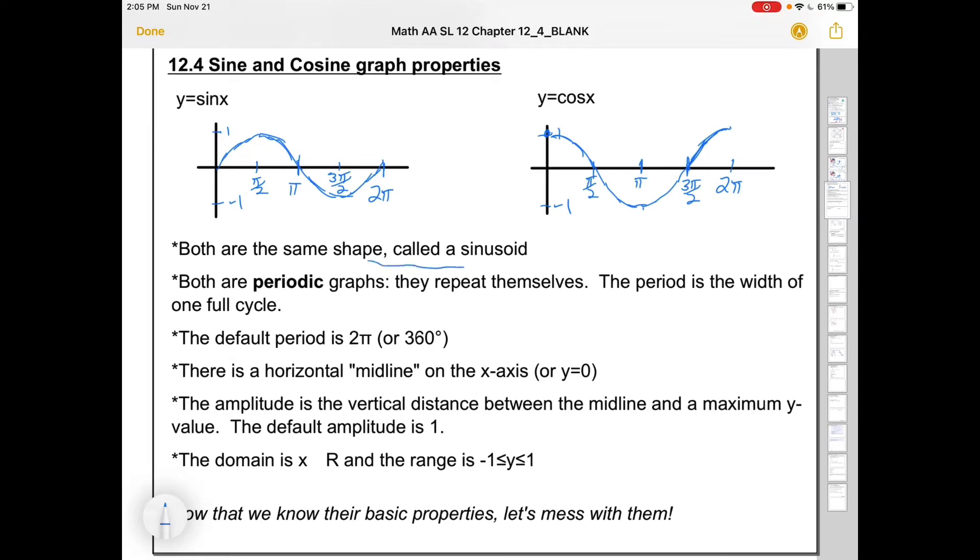Both are the same shape, called a sinusoid. So both sine and cosine are sinusoid. We developed these by saying sine θ and cos θ, but we're going to generalize more and just use x as our typical variable, because it may not always be an angle that we're talking about in the end. Both of these are what we call periodic graphs. They're graphs that repeat themselves. So this sine graph is going to keep on doing its thing over and over again, to the left and to the right.